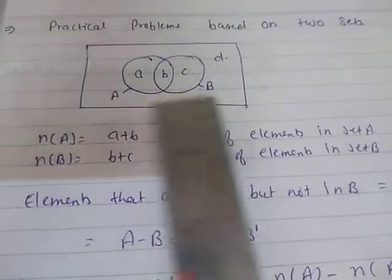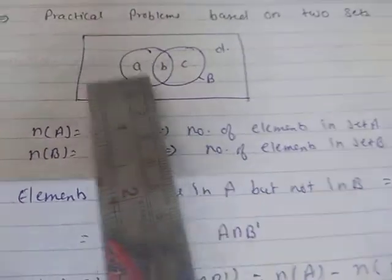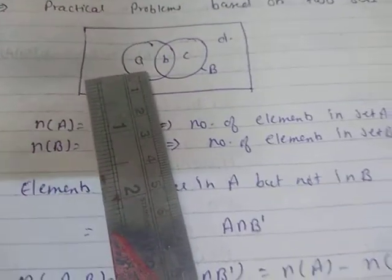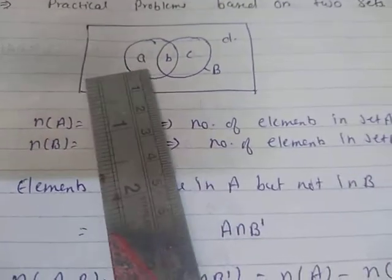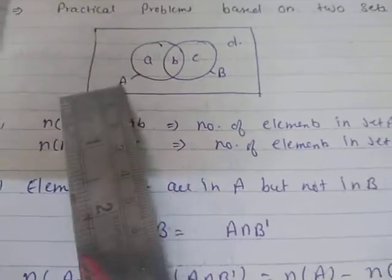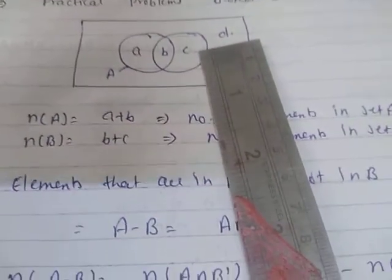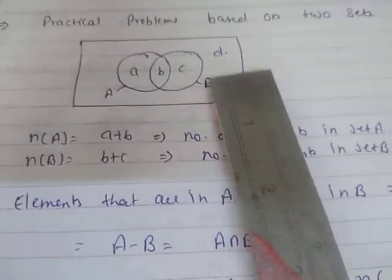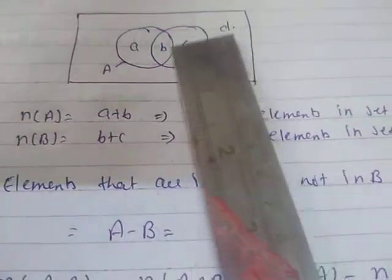The total number of elements in A∪B is a + b + c. 'Only in A' means elements in A but not in B — that is small a, which equals a minus b. Small c means 'only in B', that is b minus a, and this is your small c.